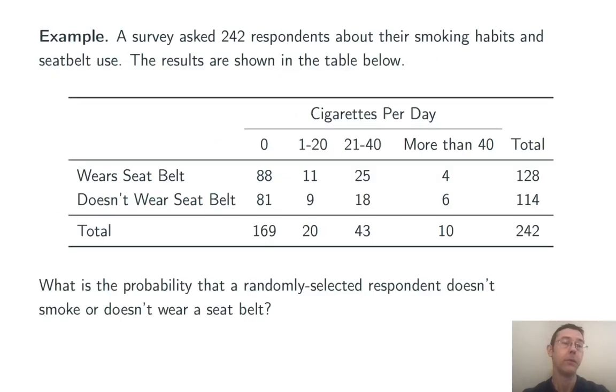Here's an example using that more general version of the addition rule. A survey asked 242 respondents about their smoking habits and their seat belt use. Here's a table with the results. You can see that we have people that wear their seat belt, 128 total, and people that don't, 114 total.